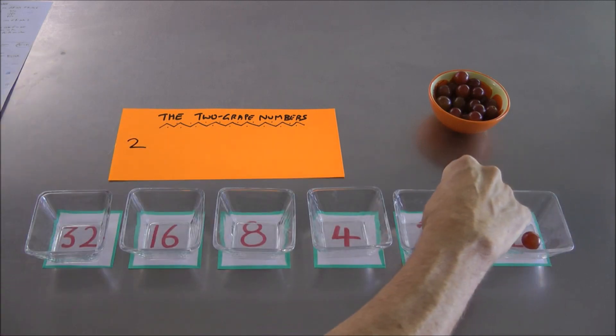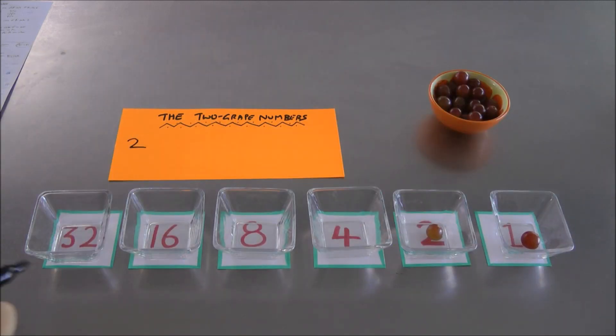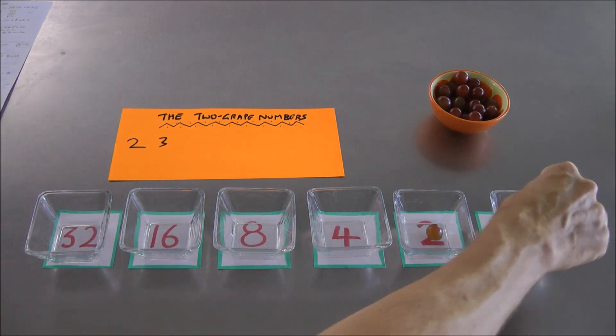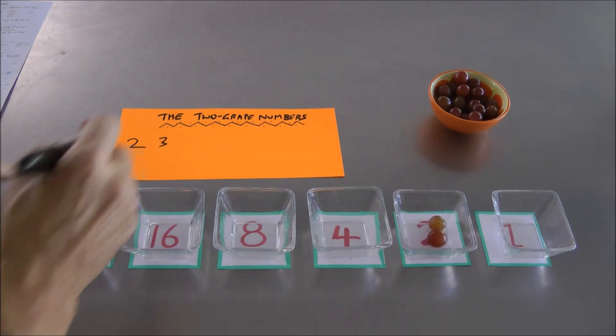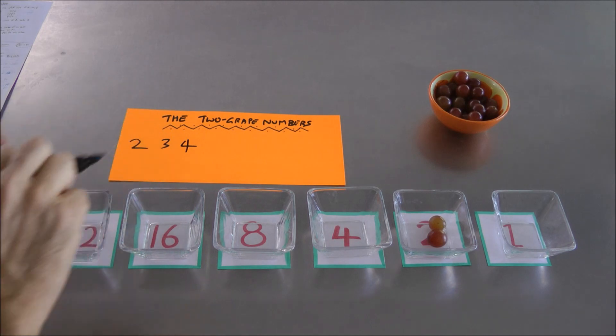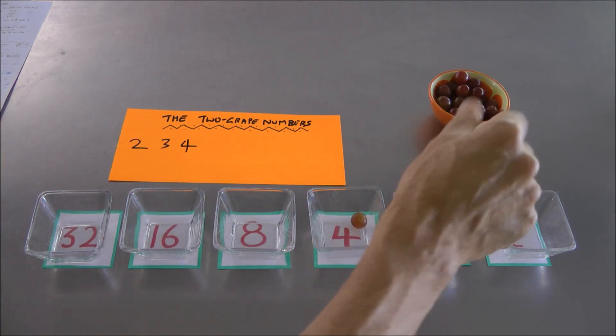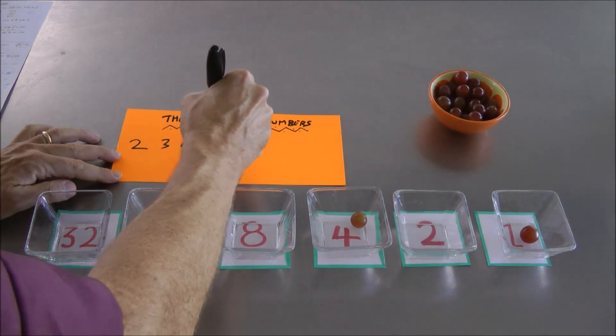Or I could put one here and one there, that represents number 2 plus 1, which is 3. Or I could put two of them in the same 2 bowl and get the number 4, two 2s. Or maybe I could put one in the 4 bowl and one in the 1 bowl, get the number 5.